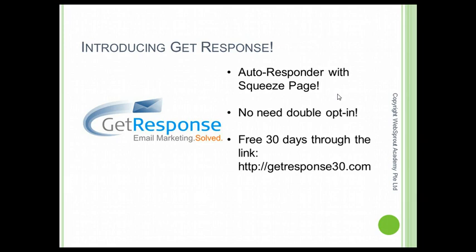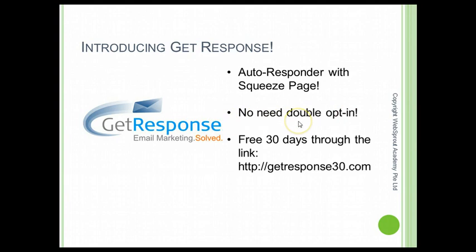Previously, people who wanted to create a squeeze page had to register a domain name, get web hosting, install WordPress, install plugins, install a theme, and set everything up — which all takes time. Now you can create a professional squeeze page in under five minutes. GetResponse also has the option to allow single opt-in, so when someone enters their email into your squeeze page it's immediately saved in your database without needing to reconfirm.